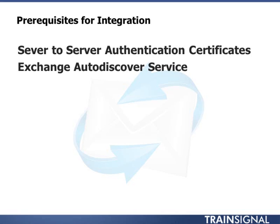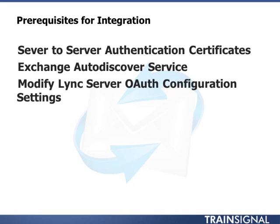Another prerequisite is the Microsoft Exchange auto-discover service. The auto-discover service configures user profiles when a user attempts to connect to Exchange for the first time — the user provides their email address and password, the client connects to the auto-discover service, and through an XML exchange, the service provides information on how to connect into the Exchange environment, including how to connect to the client access server and how to download content through web-based services. The auto-discover service must be configured on Microsoft Exchange before you can integrate Lync Server 2013. Once configured, you must set the Lync Server Open Authorization configuration to point to the auto-discover service on the Exchange server.